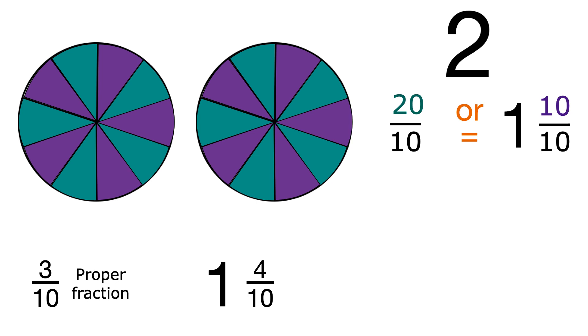1 and 4 tenths is the same as 14 tenths. And 14 tenths is an improper fraction because the numerator, the top number, is greater than the denominator, the bottom number.